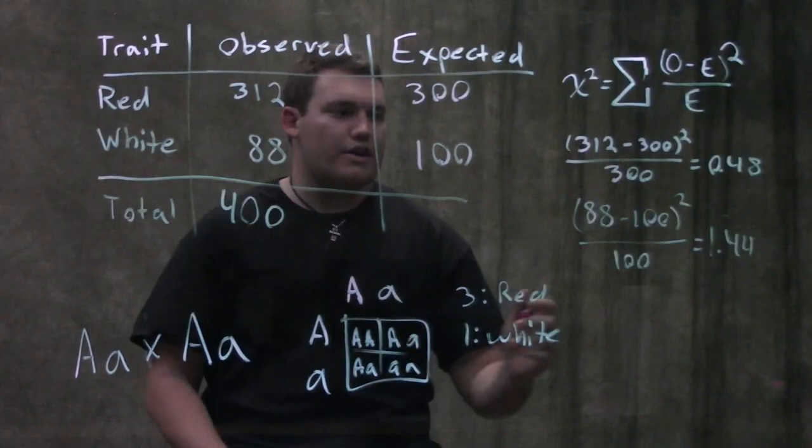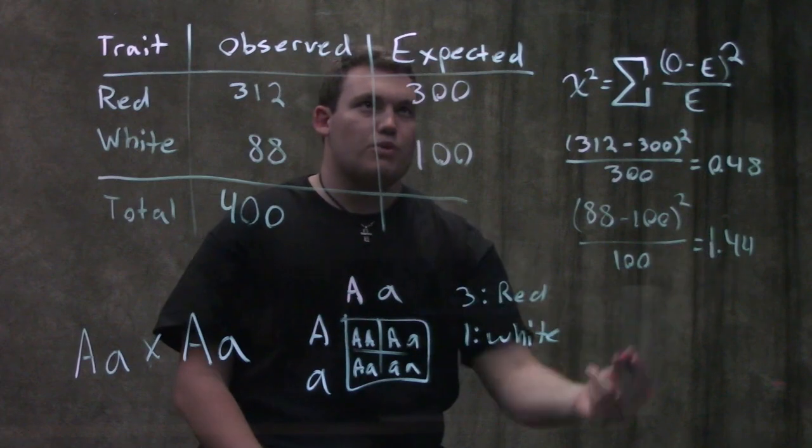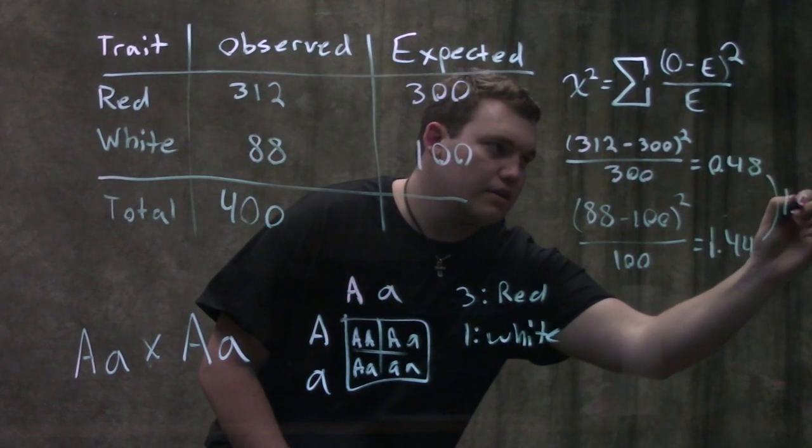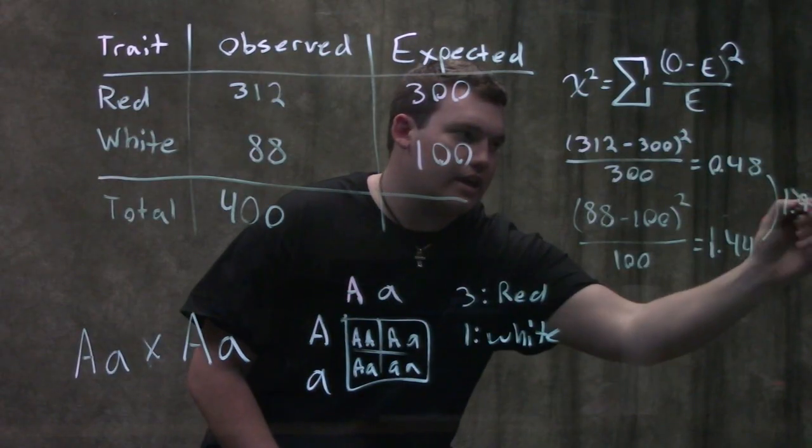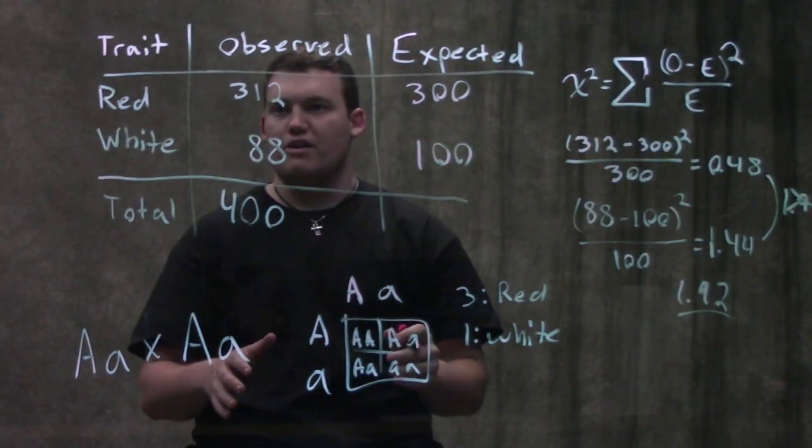So now we've done this for each of our individual traits and then we're gonna add them together. So 0.48 plus 1.44 is 1.92. 1.92 is our chi-squared value.